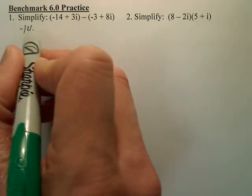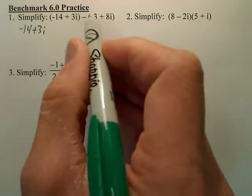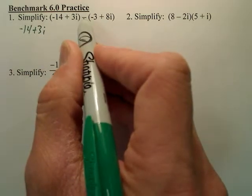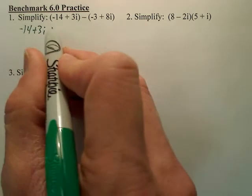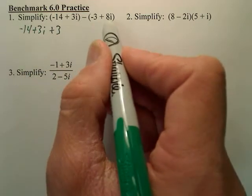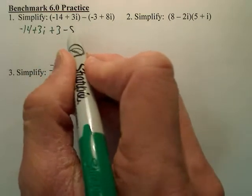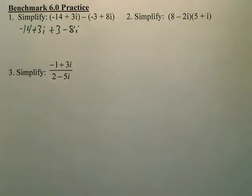So this will be negative 14 plus 3i. This means I'm going to take the opposite of negative 3, which becomes a positive 3, and the opposite of 8i, which becomes negative 8i. Basically, distribute the negative.